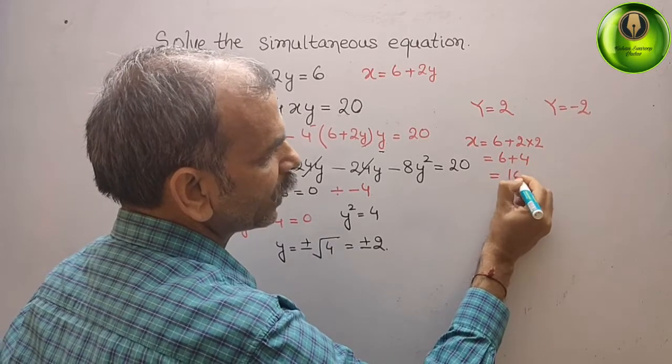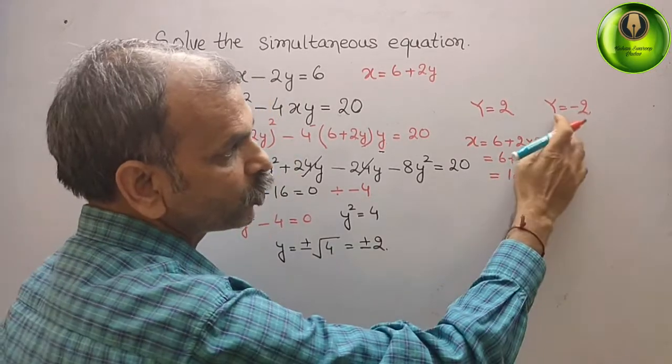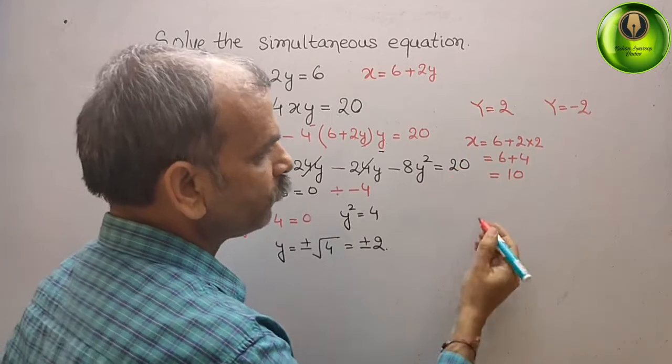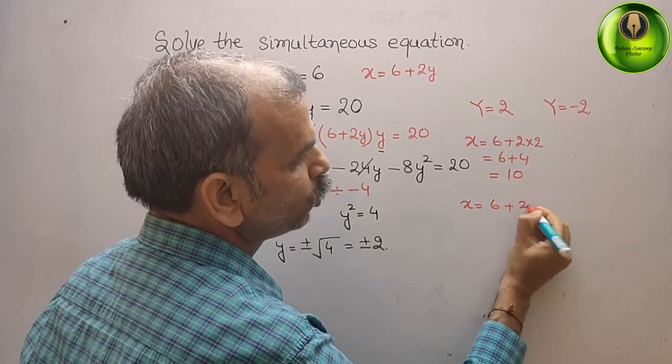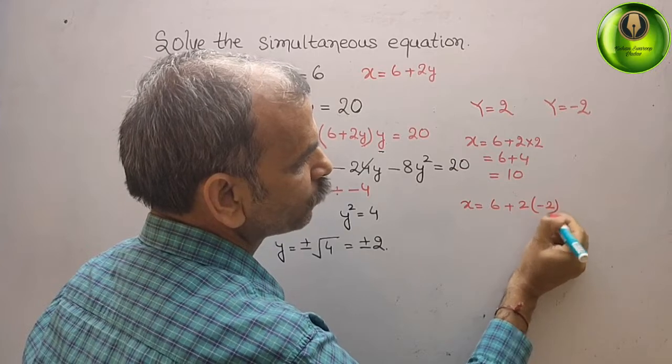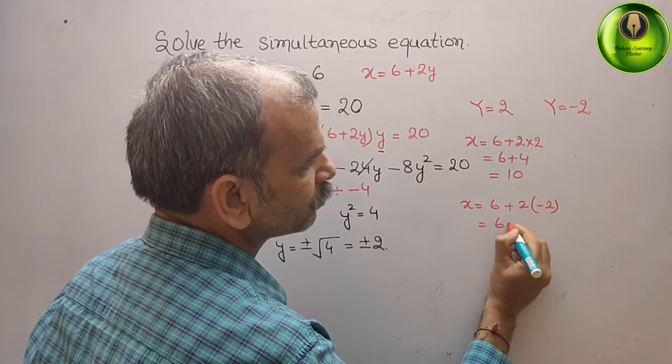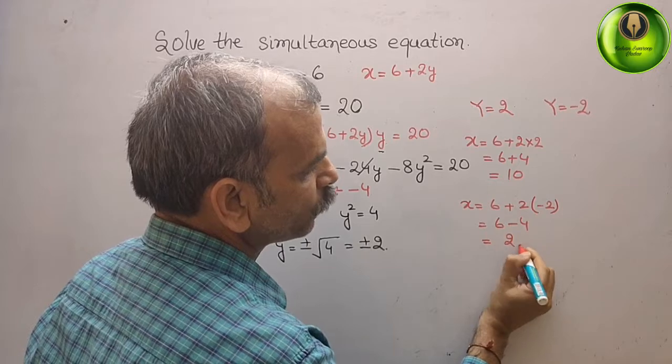If you substitute y is equal to minus 2, what we will get? X is equal to 6 plus 2 into minus 2, that is equal to 6 minus 4, that is equal to 2.